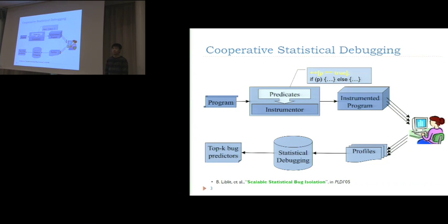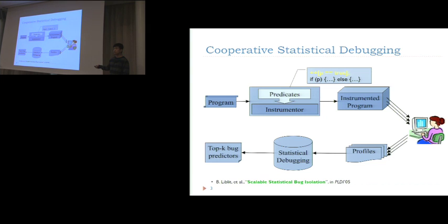So there is another promising approach called cooperative debugging, proposed by Professor Ben-Libli from Stanford. The workflow is: we have a program, we instrument it by selecting several predicates we're interested in, and the instrumented version is deployed to users. Users run it to generate traces, which are collected through the network to the developer side for analysis. Finally, top-ranked bug reports are reported to the developer to assist in debugging.